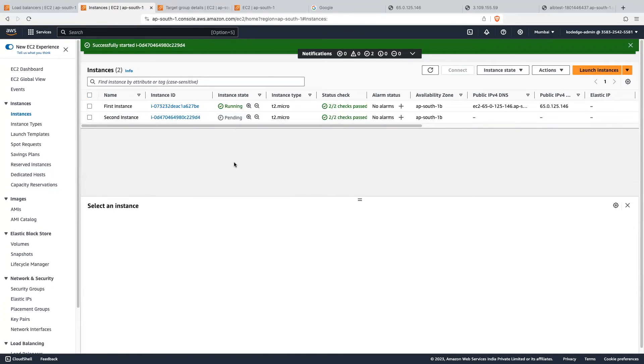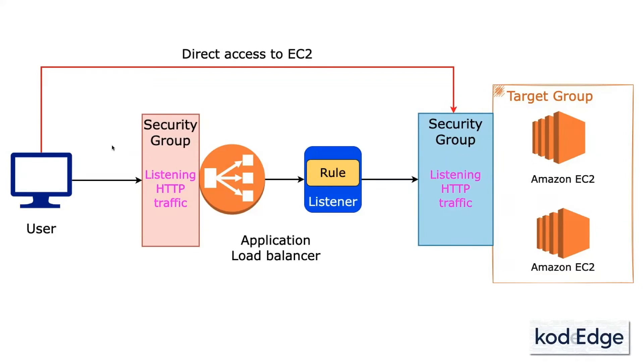Let me restart that instance again. Now in our setup there is one problem: if you hit the URL of one of the EC2 instances directly, it still works. But what we want is for the application load balancer to route the traffic to the EC2 instance — users should not be able to call our EC2 instance directly. As you see in the diagram, currently users can access EC2 instances both through the load balancer and directly by IP. We want to prevent this, so we will change the security group of our EC2 instance to accept traffic only from the application load balancer.